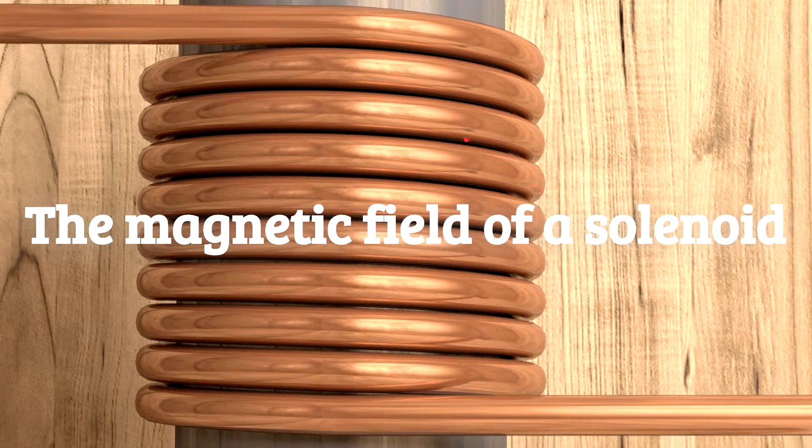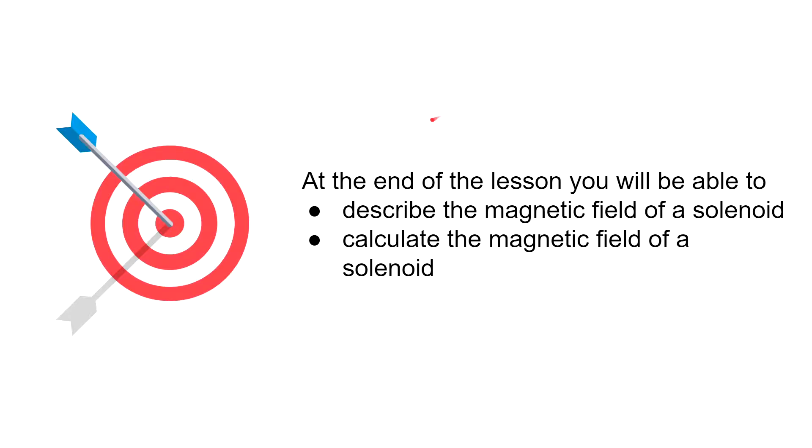A solenoid is formed by winding a very long wire onto a cylinder in the form of a helix, as shown in the picture. The diameter of a solenoid must be small compared to its length.